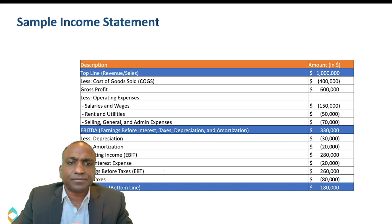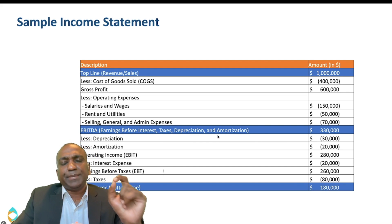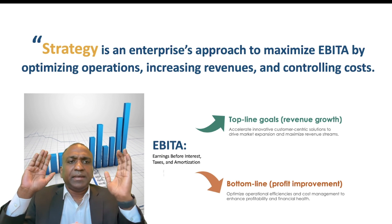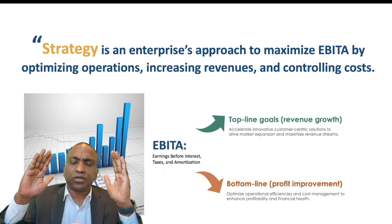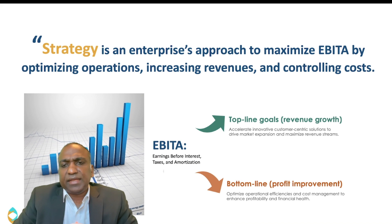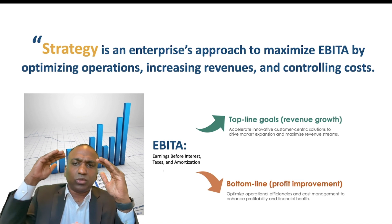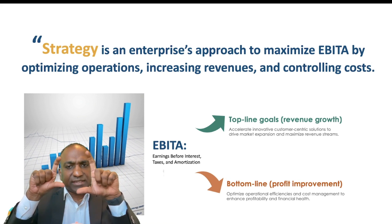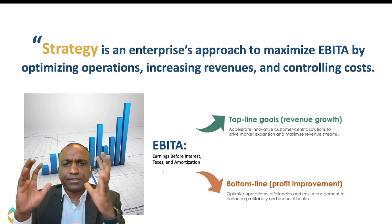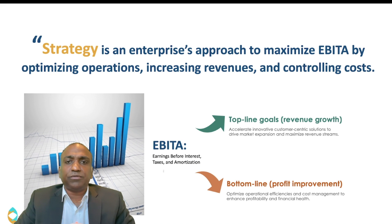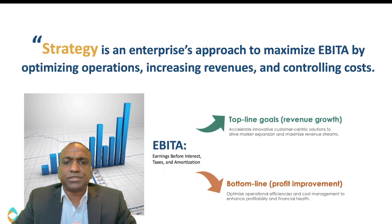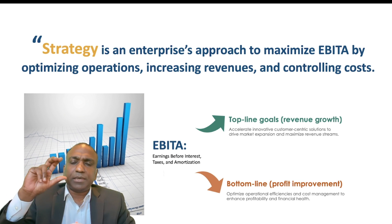So how does EBITDA apply to strategy? Strategy is an enterprise approach to maximize EBITDA by optimizing operations, increasing revenues, and controlling costs. You need to understand these three numbers together. For example, in stock markets, even if the top line and bottom line beat expectations, when the distance between them is small the market behaves crazily. All three numbers together give you the financial health of a company, and the portfolio's job is to create more and more wealth for an organization — and strategy helps to do that.